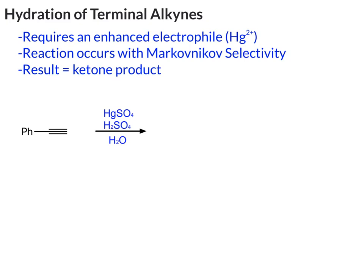Now let's work on the hydration of terminal alkynes. In this case, we need an enhanced electrophile, so instead of just the acid, we're going to add mercury 2. Because this is terminal, we're going to get Markovnikov selectivity because we have a side of the pi bond that has more hydrogen. The result of this is going to be a ketone product, and we'll get a single product when we work with the terminal alkyne.